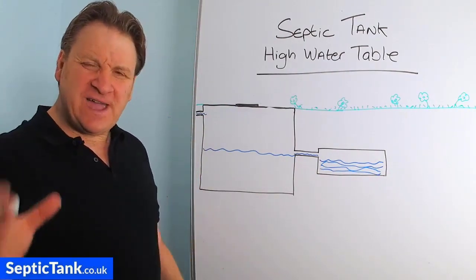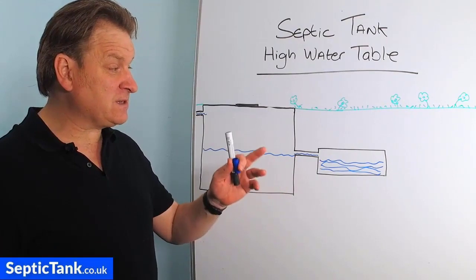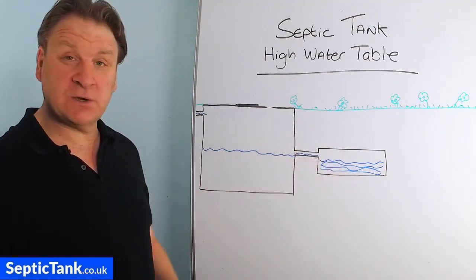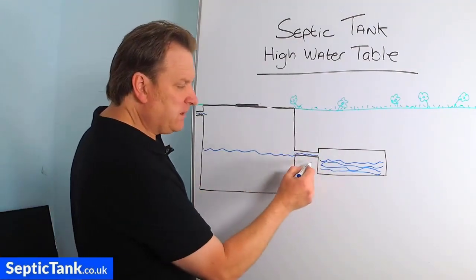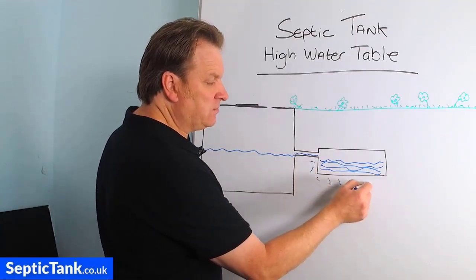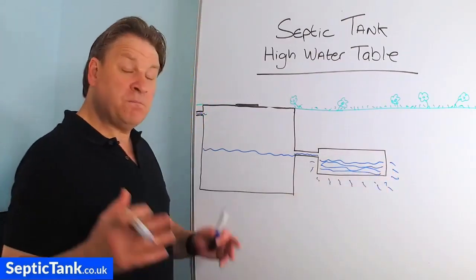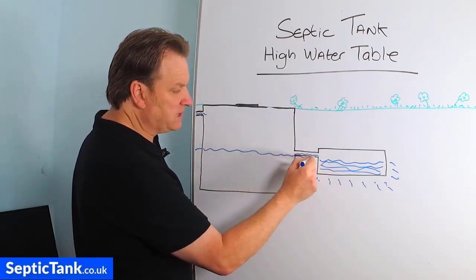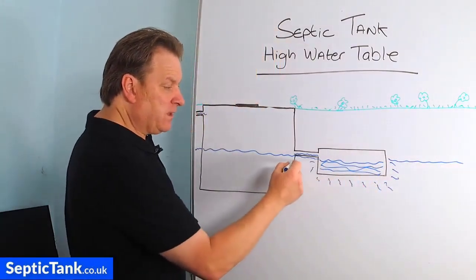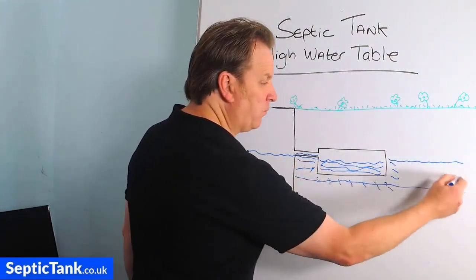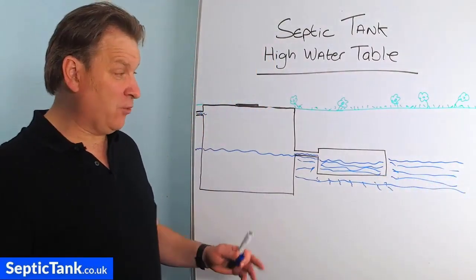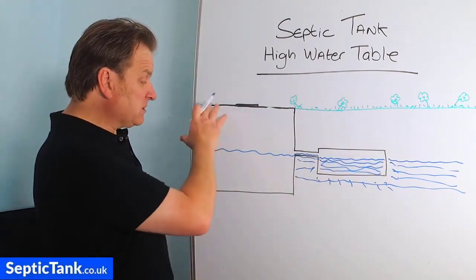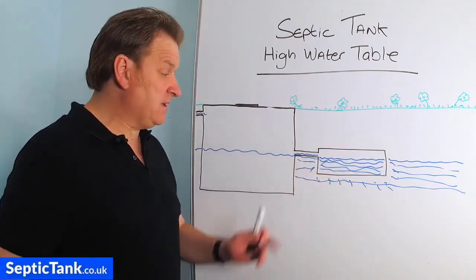If you live in an area that has a high water table, it will affect the function and the permeability of the water in the soakaway. Normally the water would just soak away naturally into the soil. But when you've got a high water table — let's say the water table is the same height as the water in the septic tank — your soakaway is surrounded by water and can't soak away anymore. The high water table will engulf and consume your soakaway, so the water will come out of the septic tank, go into the soakaway, and just stay there.